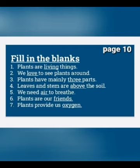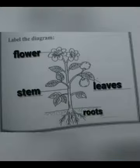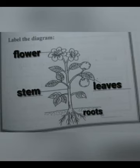Number 6: plants are our friends. Trees provide us oxygen. Label the diagram. First is flower. Second, stem. Third, leaves. And fourth one is root.